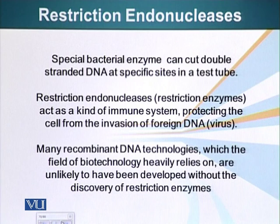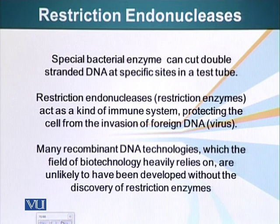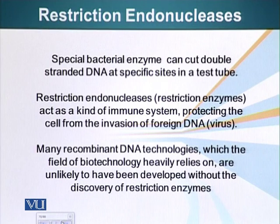However, after several generations, the bacteriophage DNA accumulated the same chemical modifications and was able to infect E. coli K very successfully. But now that bacteriophage had a different type of chemical modification, and when taken back to E. coli B strain, it could not infect E. coli B very well.